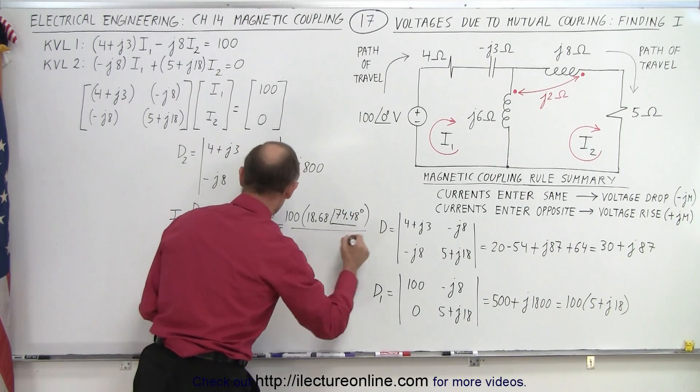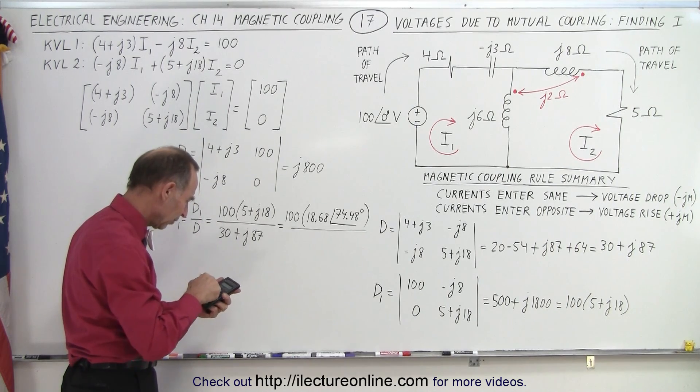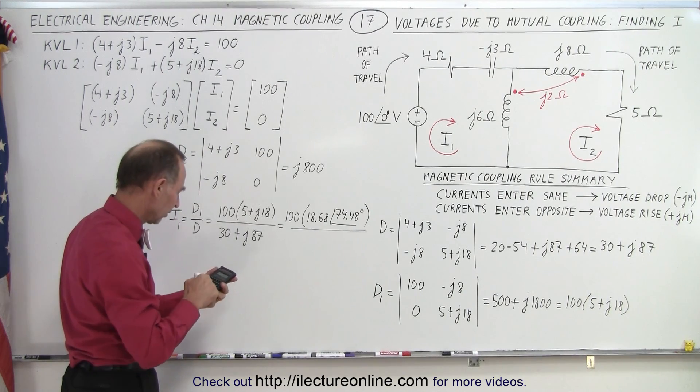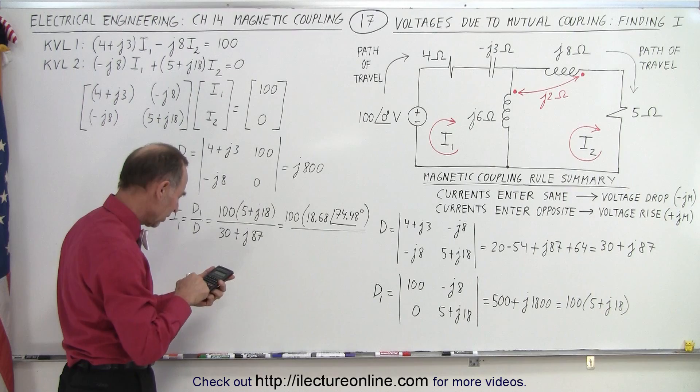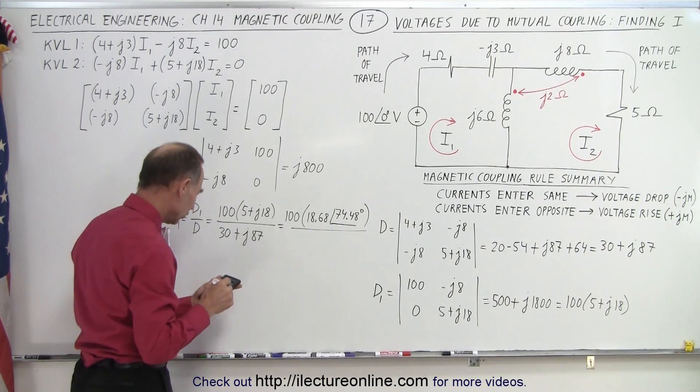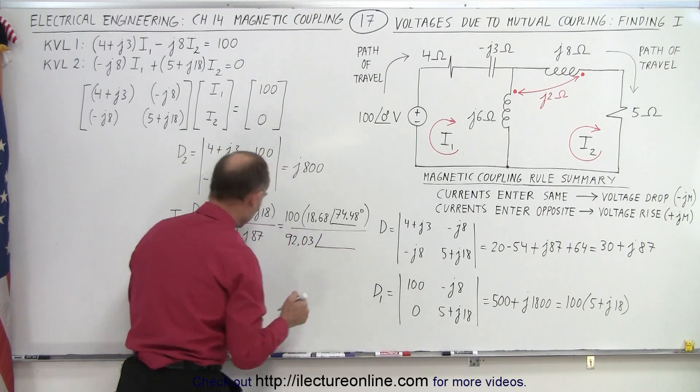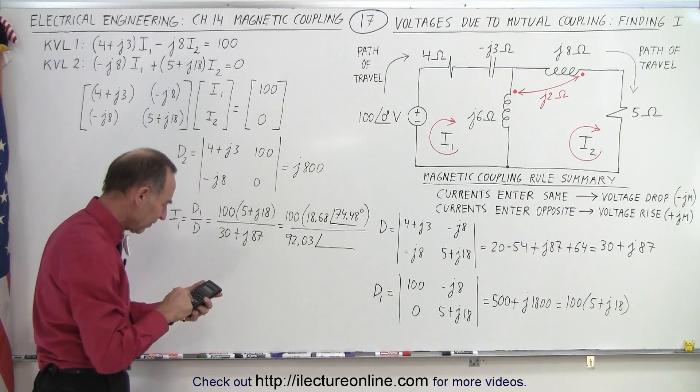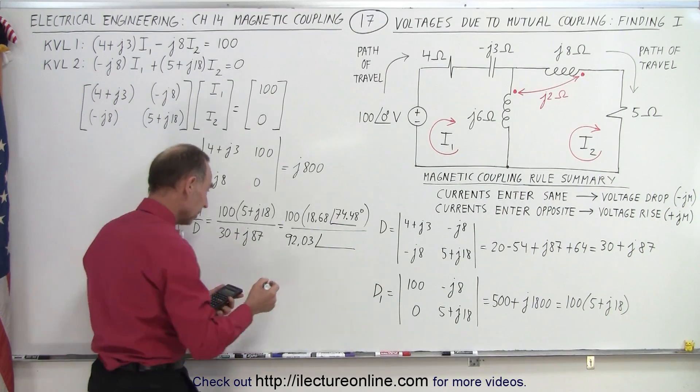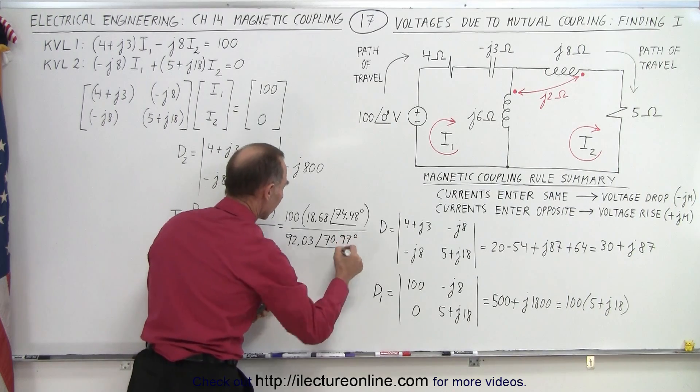And in the denominator, here we have 87 squared plus 30 squared equals, take the square root of that. It gives me 92.03, with a phase angle of 87 divided by 30, take the inverse tangent, it gives me 70.97 degrees.